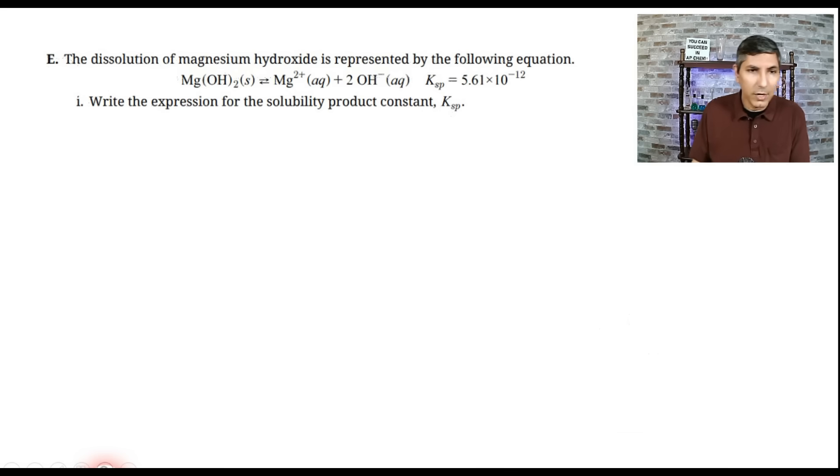Now, moving on to part E, we have a question about the dissolution of magnesium hydroxide. That's represented by the following equation. And we have that here. And there's a Ksp value. And part one says, write the expression for the solubility product constant, the Ksp. So all we have to do here is products over reactants raised to the power of the coefficients. Of course, we have to leave out the solid. So it's Ksp equals the magnesium ion concentration times the hydroxide ion concentration squared. And of course, that squared is because there's a two in front of the hydroxide. So give yourself a point if you said that.